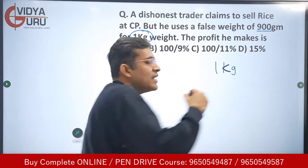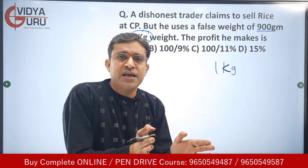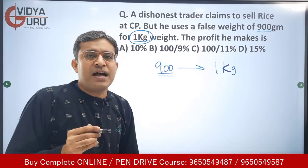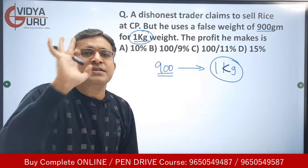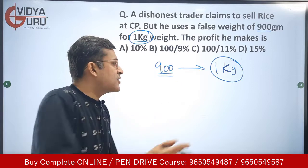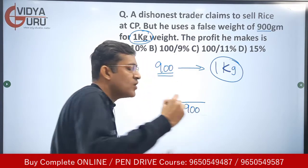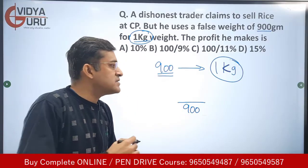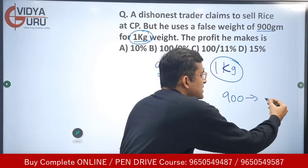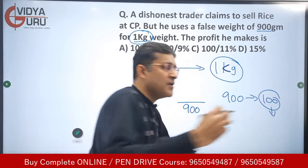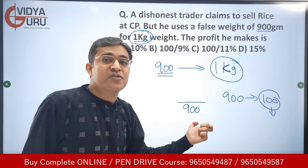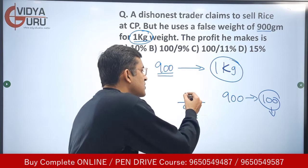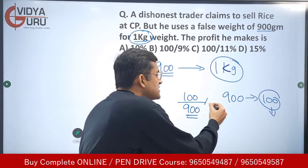He does not give you one kg of rice — he gives you only 900 grams. To sell you one kg of rice, he doesn't have to purchase one kg; he only has to purchase 900 grams and pass it on to you as one kg. So the cost price will be only for 900 grams, and 900 grams is passed on as one kg, meaning 100 grams is the profit he makes on every 900 grams purchased.